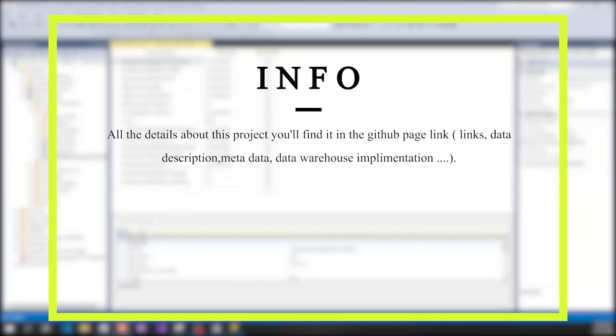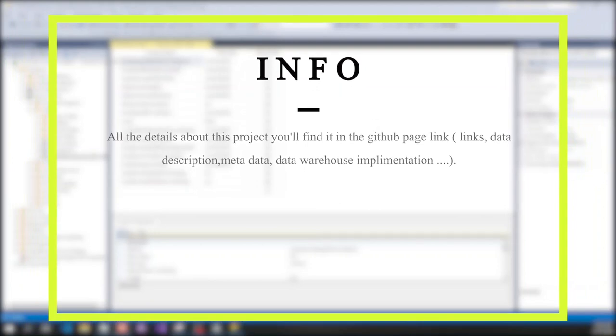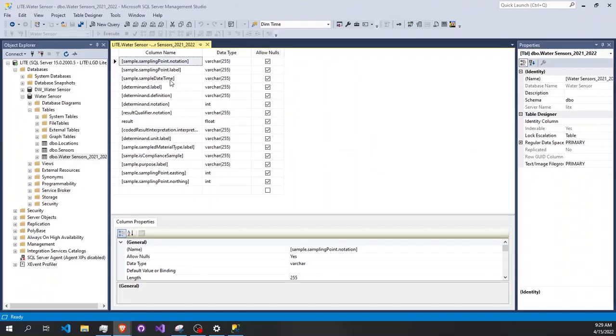As you see, the schema of data is divided into different columns. For example, we have the sample point notation, the label, the date time, and the determinant label which means the test name and definition, and we have the results and other stuff.